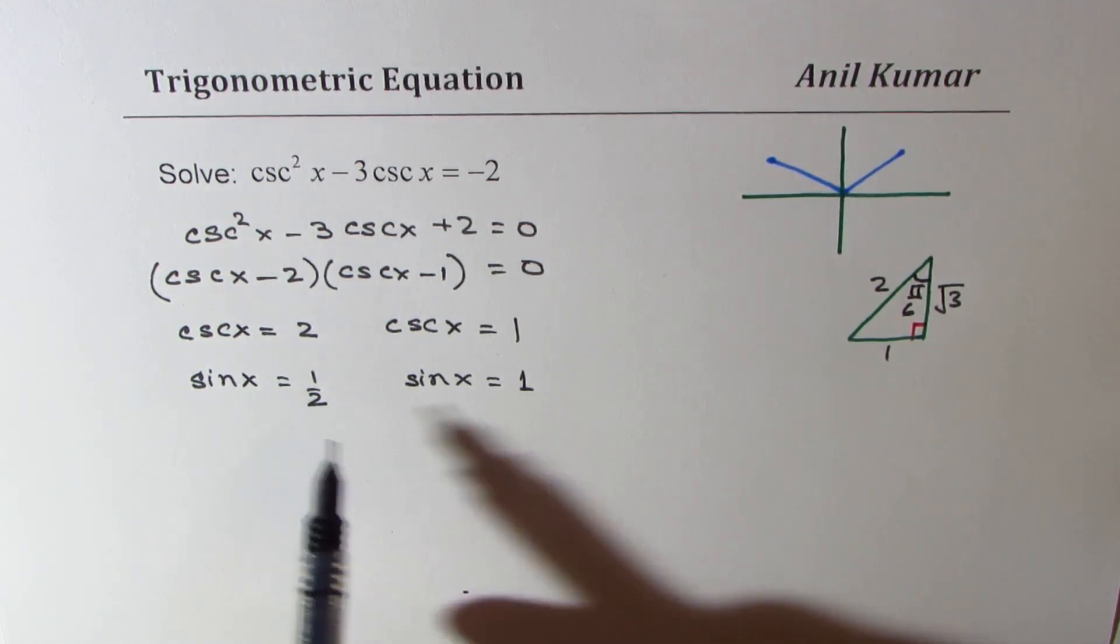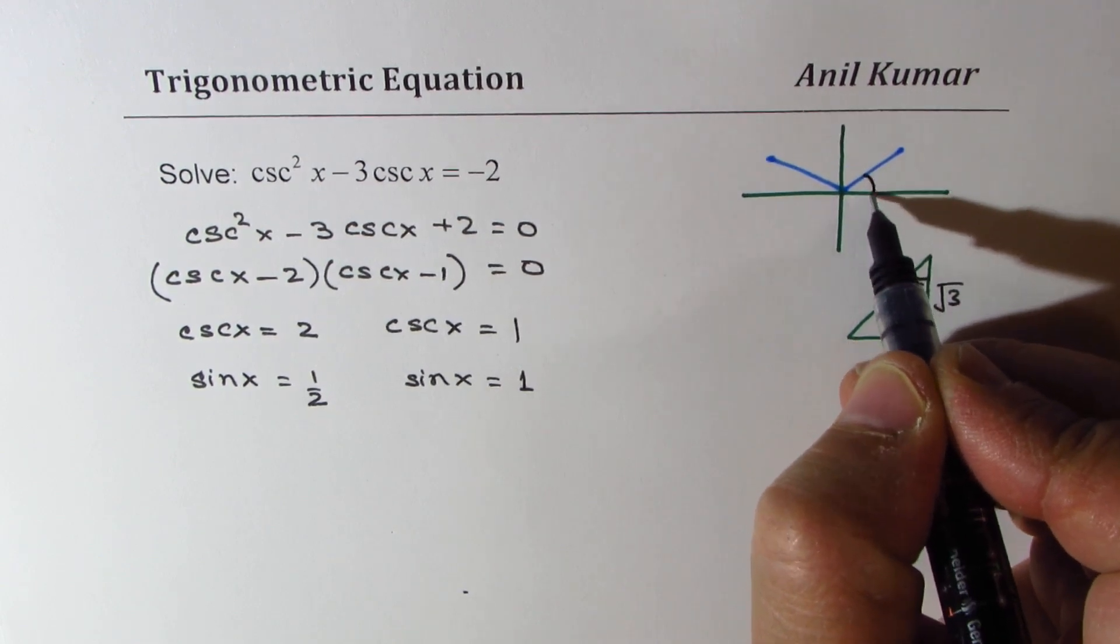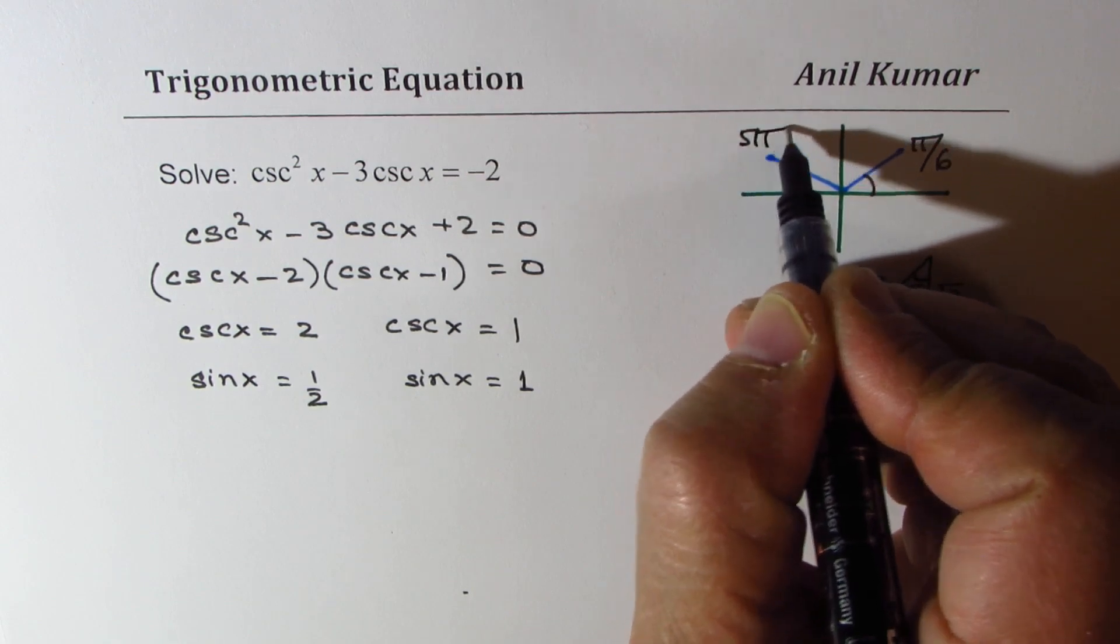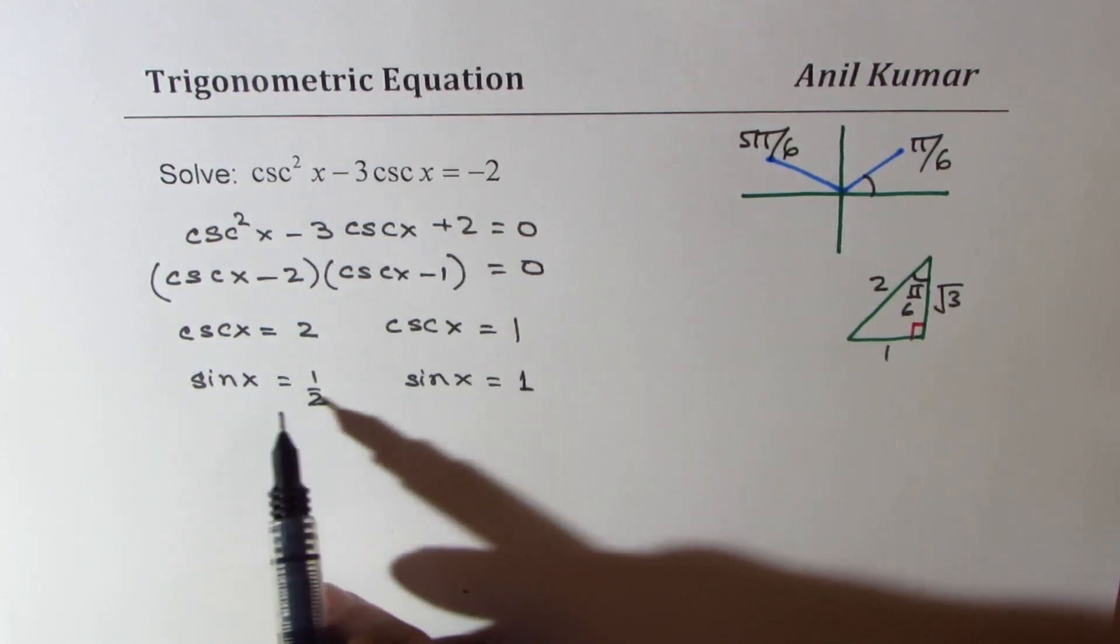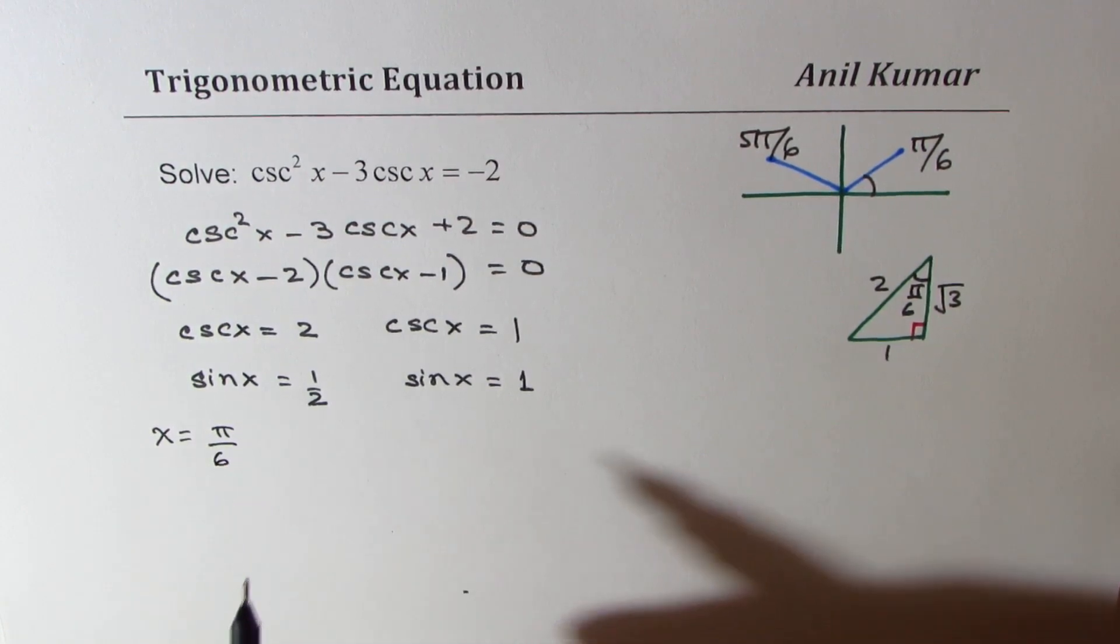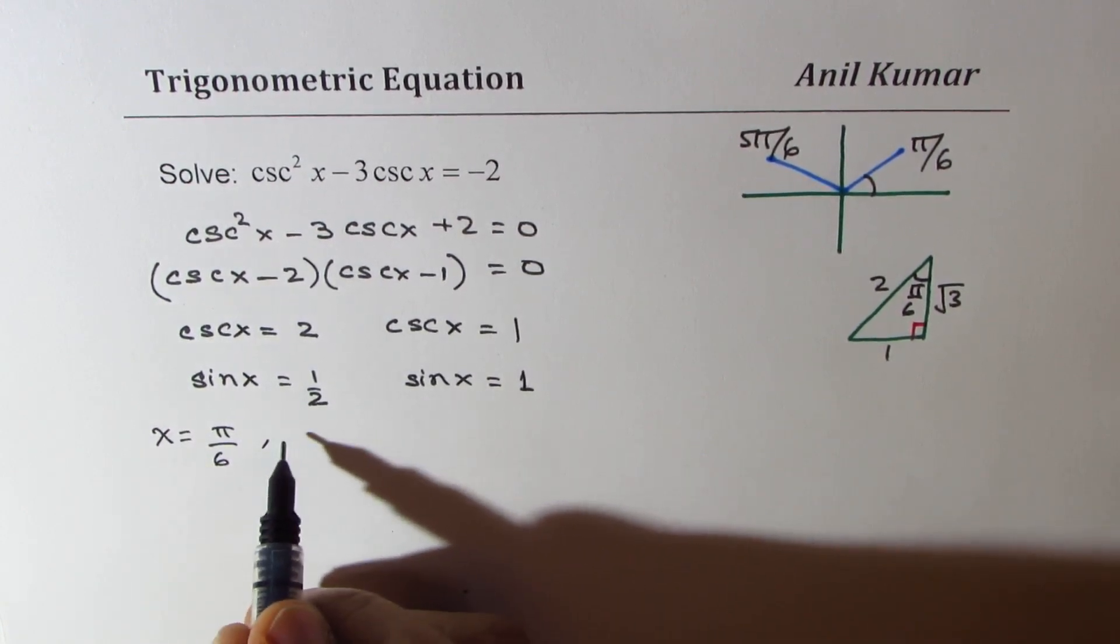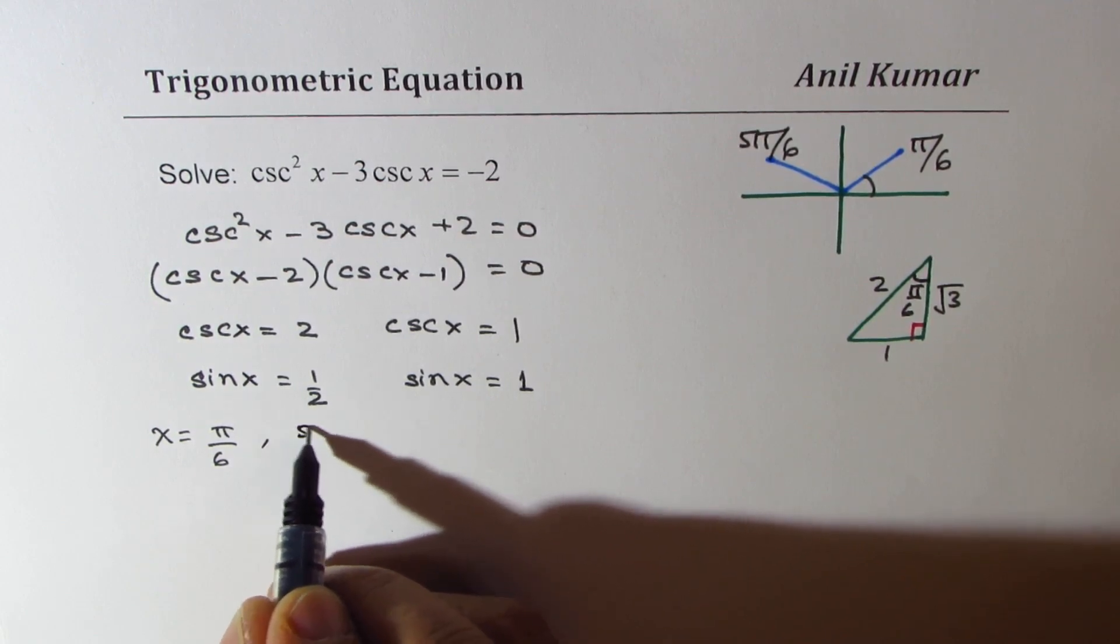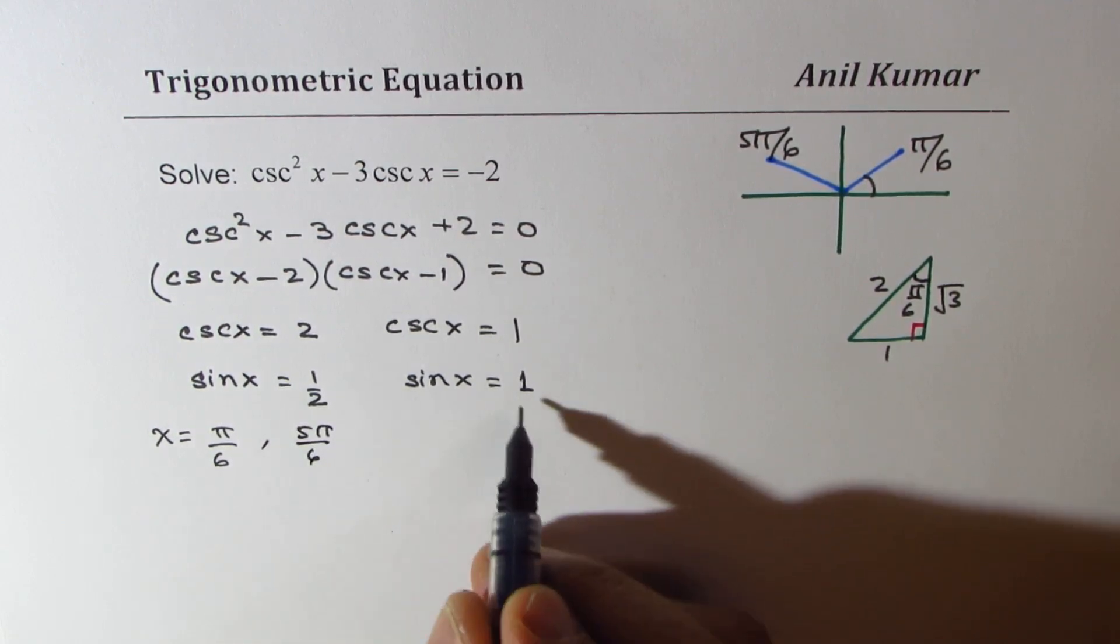So for half, we get two solutions. One is pi by 6. The other one is 5 pi by 6. So here we have x equals pi by 6, and also x equals 5 pi by 6. And for 1...